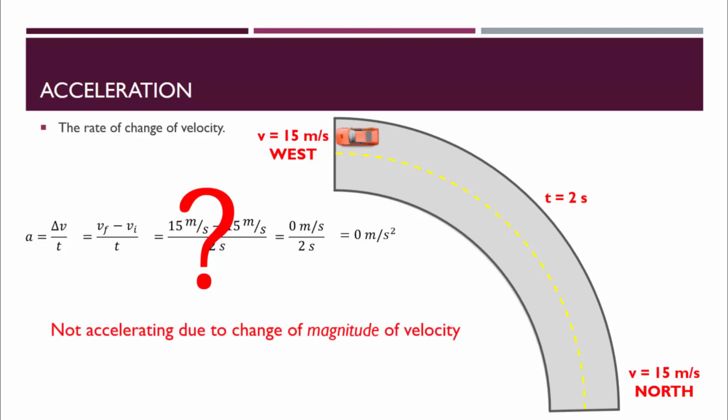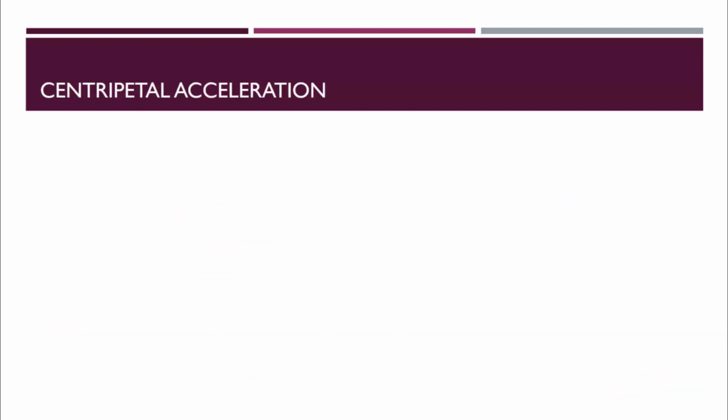The problem here is that the car is not accelerating because of a change in its magnitude of velocity. This is not an example of linear acceleration. This is an example of centripetal acceleration. We're still talking about the rate of change of velocity, but instead of the velocity changing because of a change in magnitude, it's changing because of a change in direction.